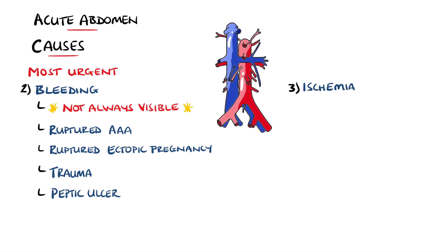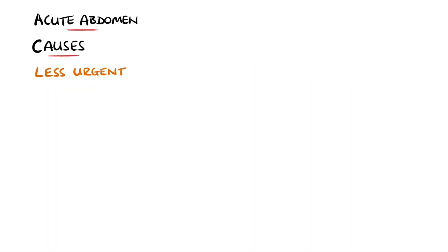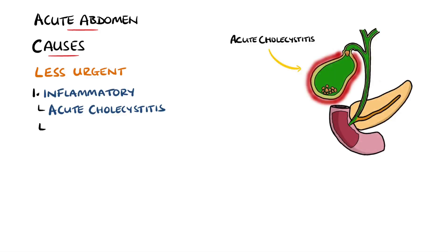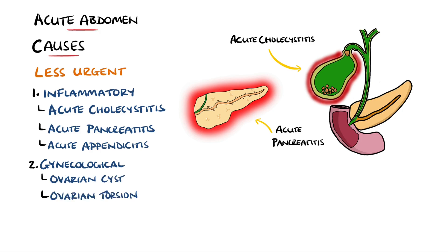Ischemic bowel is also an emergency, characterised by pain that is disproportionately more severe than the clinical picture. The other causes can be divided by category, including inflammatory causes such as acute cholecystitis, pancreatitis, or appendicitis. Other gynecological causes include rupture of an ovarian cyst or ovarian torsion. Infections are another cause, featuring intra-abdominal abscesses, which pose a risk of developing peritonitis.